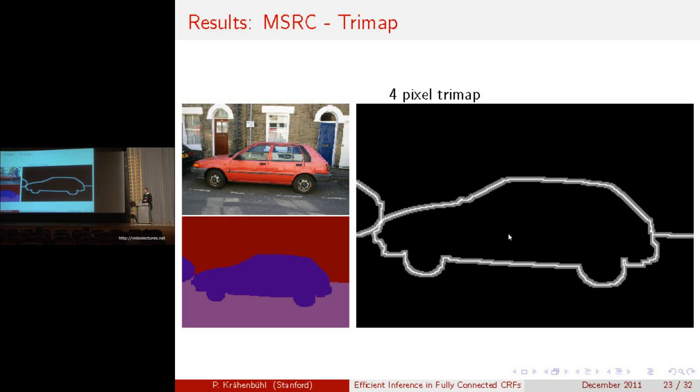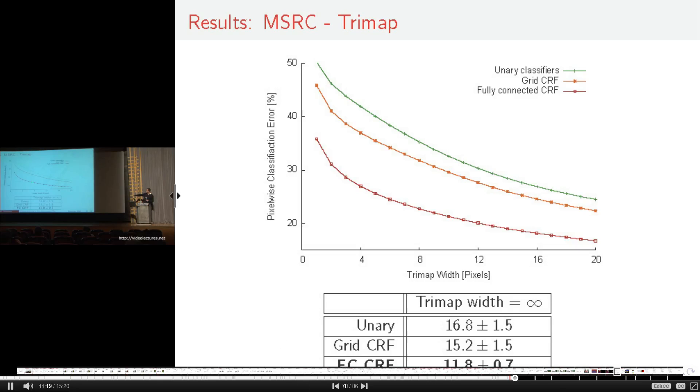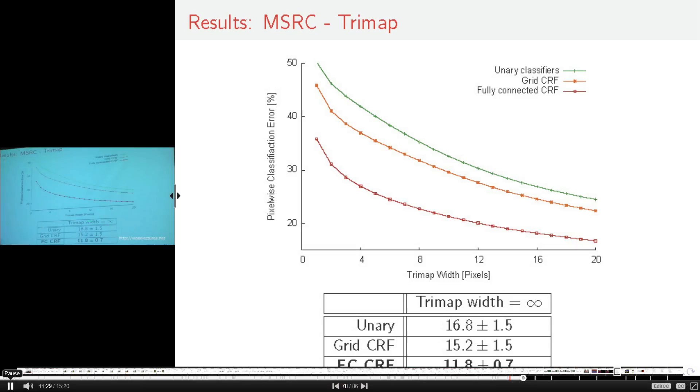This here is the trimap evaluation. On the bottom, you can see the fully connected model, which has a much lower error than both the grid CRF or the unary classifier. Here, the numbers show the trimap evaluation for size infinity, which is for the complete image. Again, you can see that the fully connected model has roughly a three times improvement over the simple grid structured CRF.